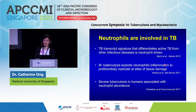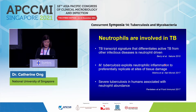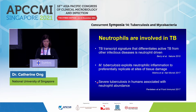Neutrophils have been pretty much underplayed in the role of TB. We've been taught that TB is typically about macrophages and dendritic cells, antigen-presenting cells. But neutrophils have now played a more prominent role. We have increasing evidence that they differentiate active TB from other infectious diseases and drive the TB transcript signature. MTB infection also exploits neutrophil inflammation, causing more tissue damage. Severe TB in humans is associated with neutrophil abundance, and we quite often see predominant neutrophilia in our TB patients' full blood counts.